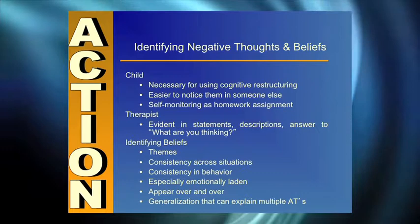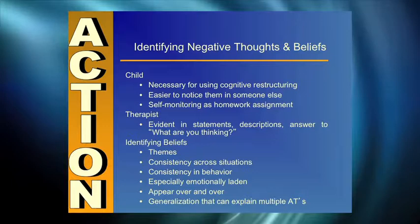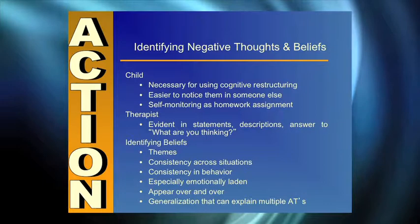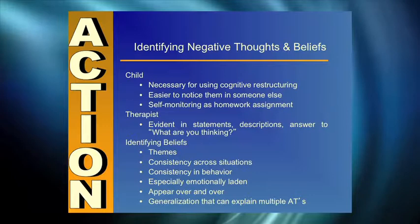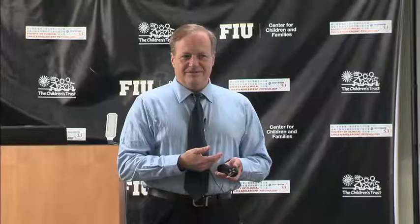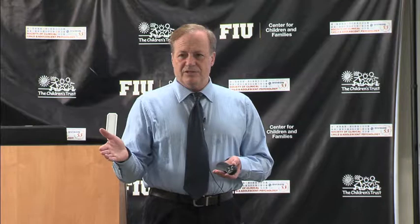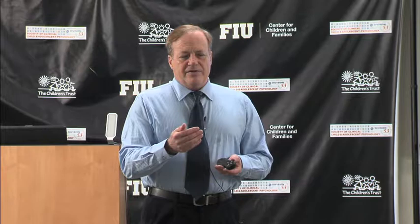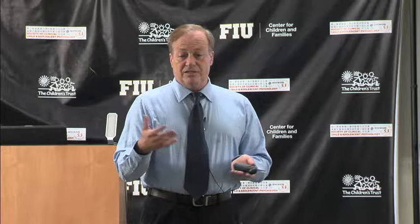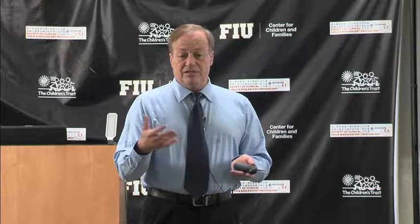We want to start getting into the negative thoughts that kids have because they're necessary for cognitive restructuring. Kids have a hard time recognizing their own thoughts. In a group setting it's easier because it's easier to notice someone else's negative thoughts than your own. So starting around the sixth session, we introduced a game called 'Catch the Negative Thought' — whenever a group member verbalized a negative thought, someone in the group would yell out 'negative thought' and whoever caught it first got a bead.